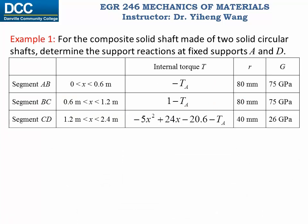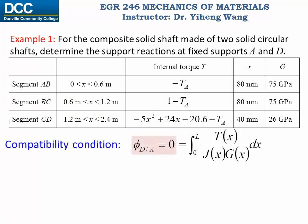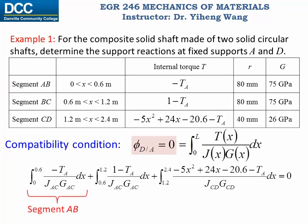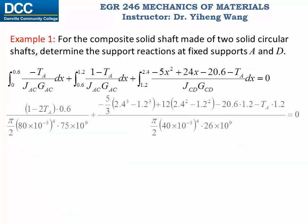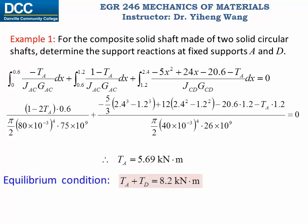Now we have all the required information for our compatibility condition. We integrate from point A through point D, breaking the integration into three parts for segments AB, BC, and CD. After substituting all values, although the equation looks complicated, it has only one unknown — TA. Solving gives TA = 5.69 kNm. Substituting back into the equilibrium condition gives TD = 2.51 kNm. Both values are positive, confirming their directions agree with the assumed counterclockwise orientation about the x-axis.